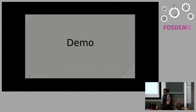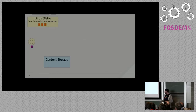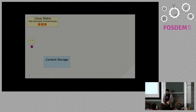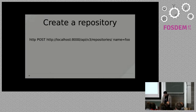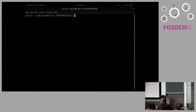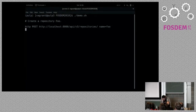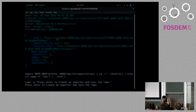Now to my favorite part of the presentation: the demo. I'm going to be rotating between the terminal and the slide deck. We have a repository out on the internet containing three files, a user that's going to upload a file, and a Pulp instance that doesn't have any content in it right now. Let's begin by creating a repository — we're going to make a REST API call using HTTPie. The repository got created.